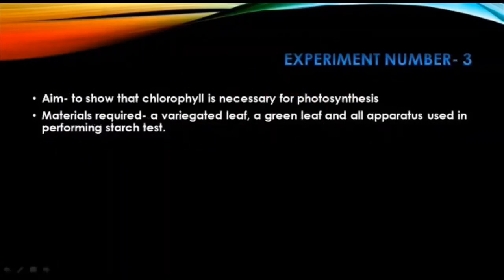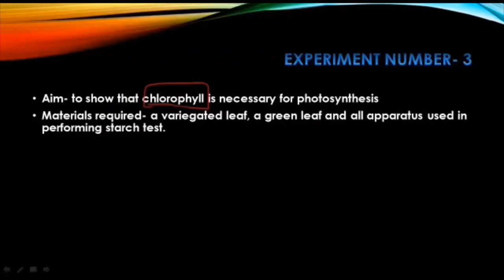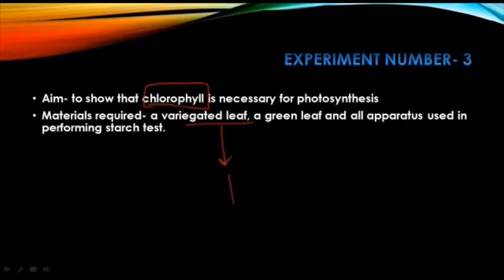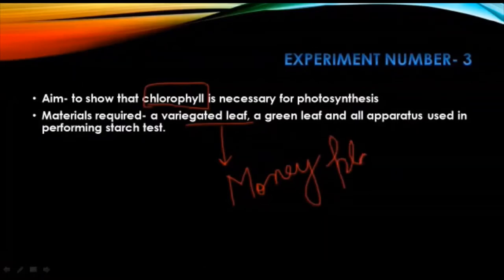Next is Experiment Number 3, which is very important: to show that chlorophyll is necessary for photosynthesis. For this we require a variegated leaf, a green leaf, and all the apparatus used for the starch test. A variegated leaf is a leaf with multiple colors — one example is the money plant. Such a leaf has both green areas and yellow or white areas.